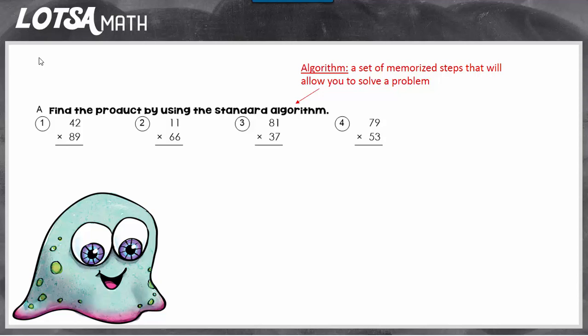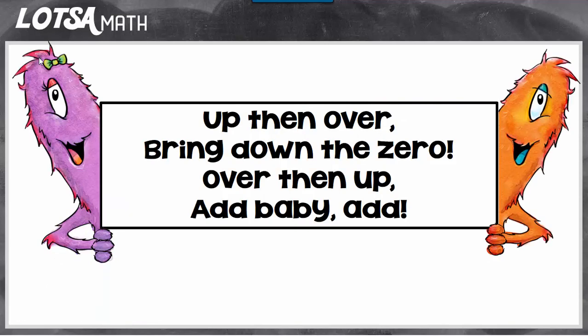They're two-digit by two-digit numbers. So the algorithm is going to be different for these types of problems, but there's a little rhyme you can remember to help you remember the steps. It goes up then over, bring down the zero, over then up, add baby add. So let's look at how that can help us solve some problems.